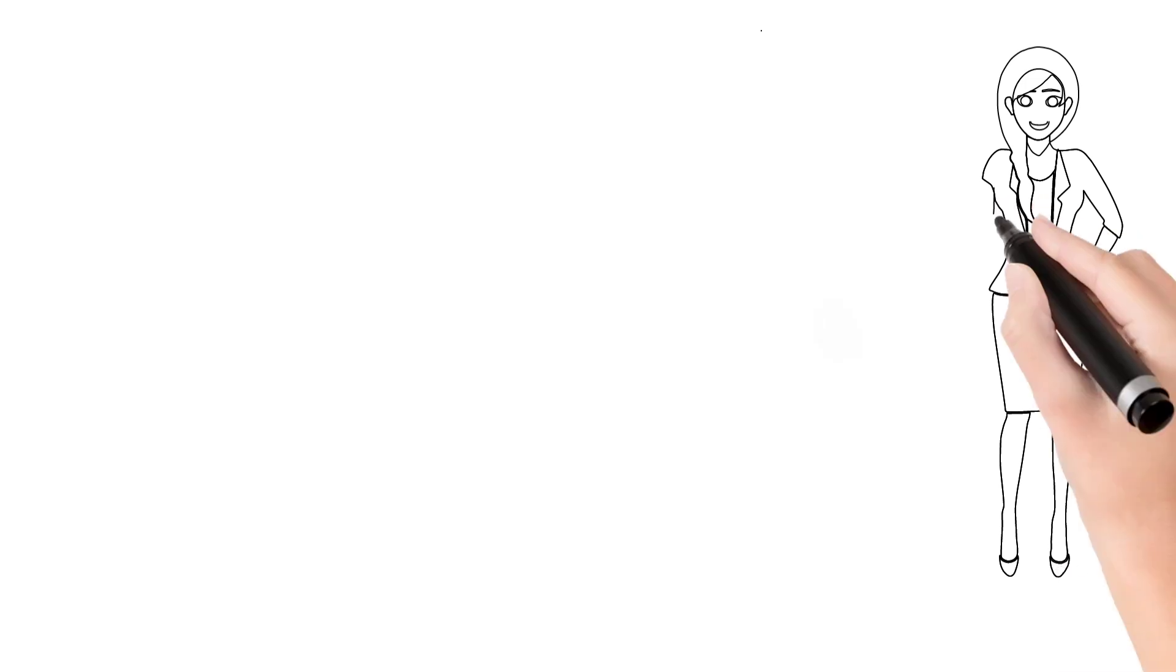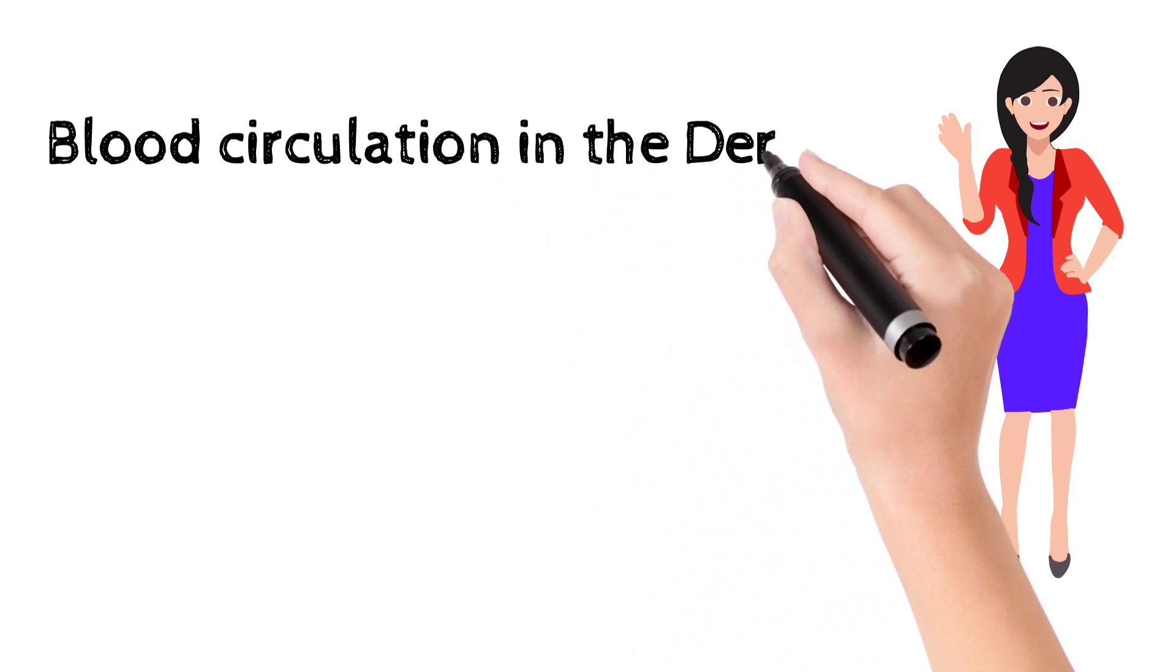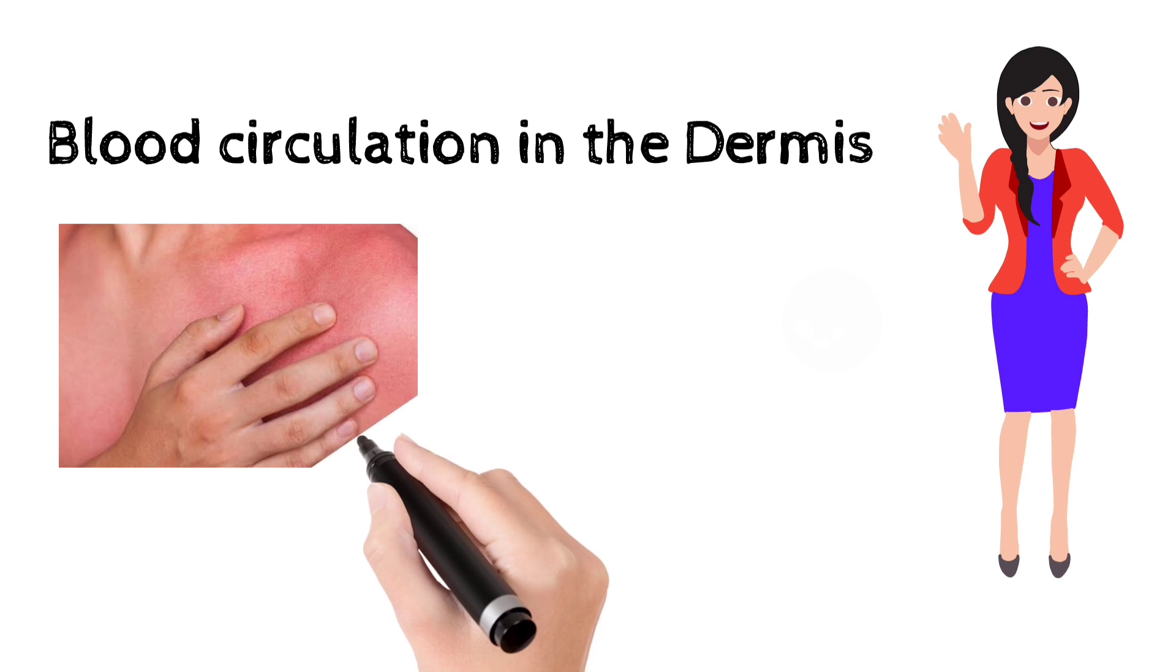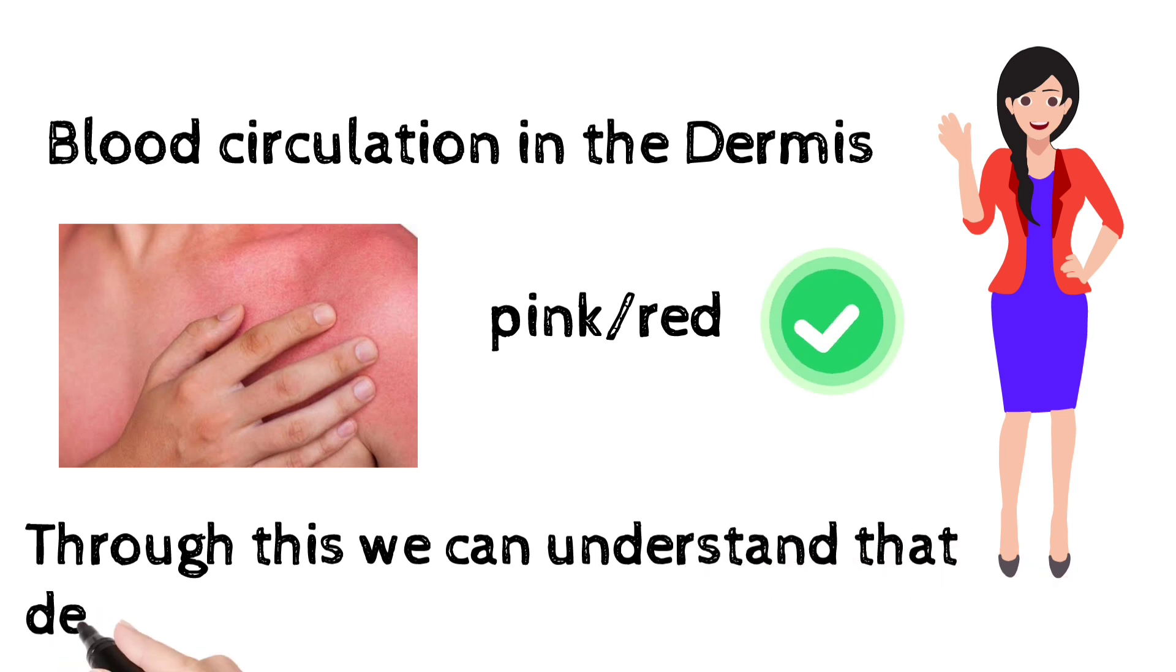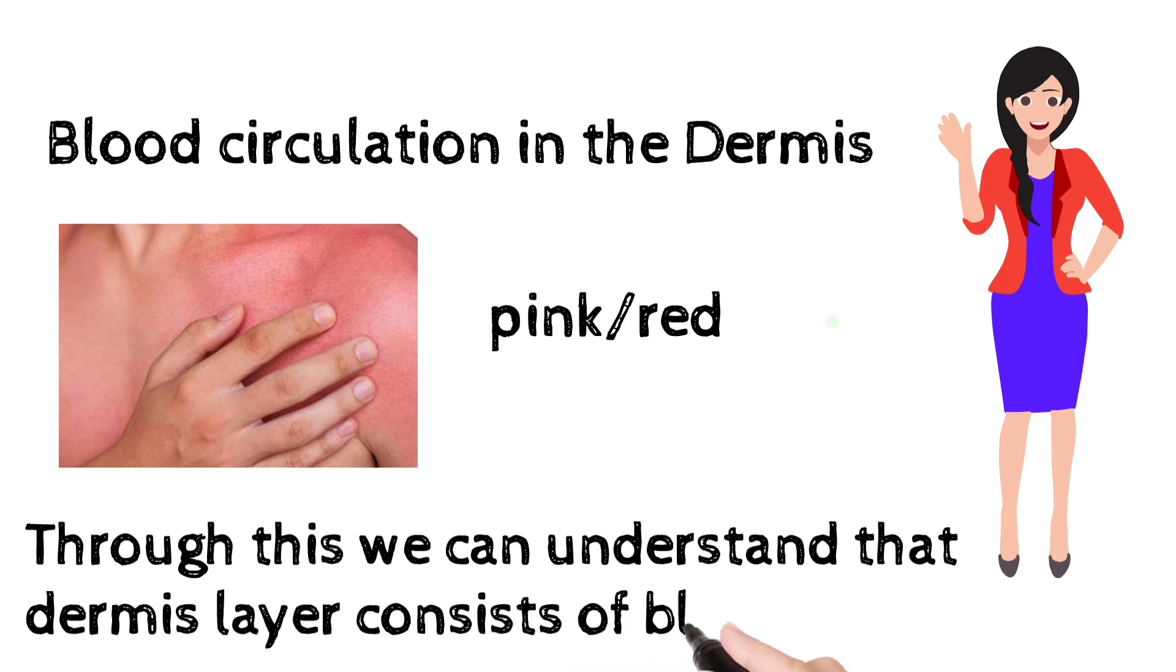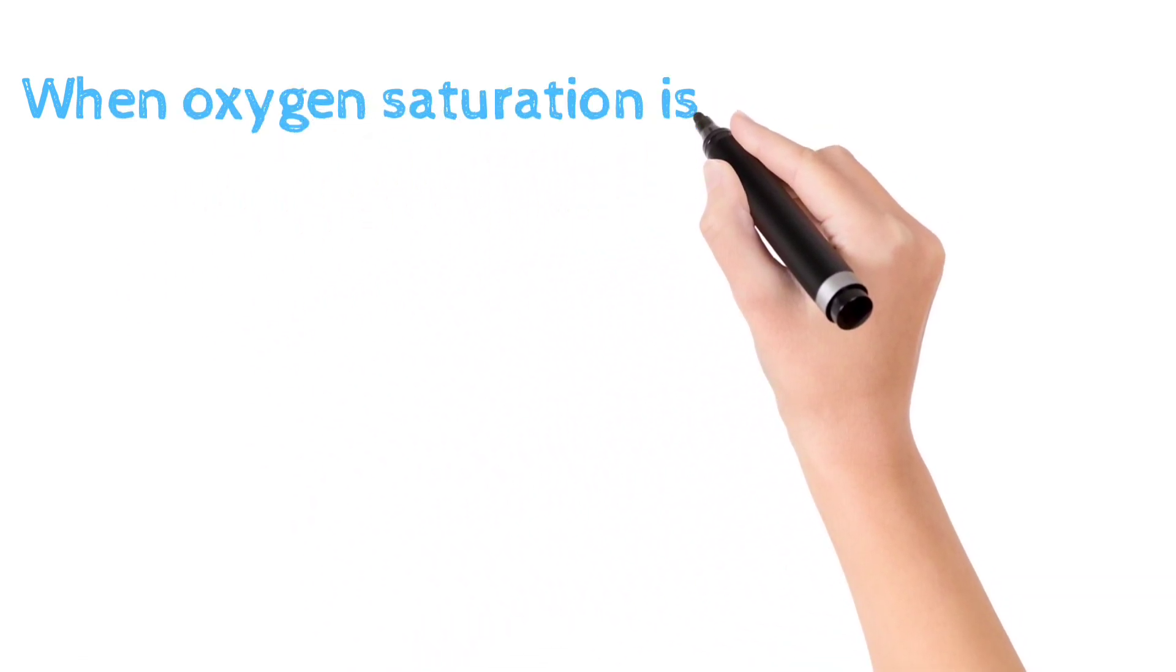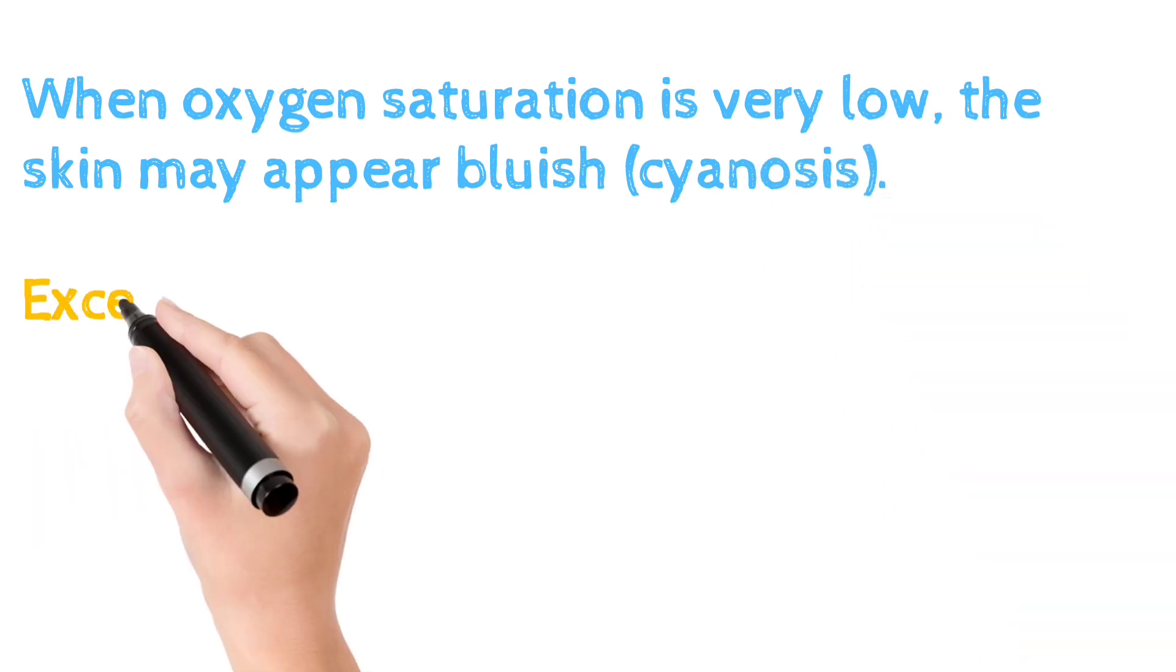Another factor for skin color variation is blood circulation in the dermis layer. For example, when doing massages, increased blood flow makes the skin appear pink or red. The amount of blood circulation in the dermis layer affects the color visible on the skin. Low oxygen saturation causes blue color, called cyanosis, and excessive levels of bile pigments in the blood cause yellow discoloration.